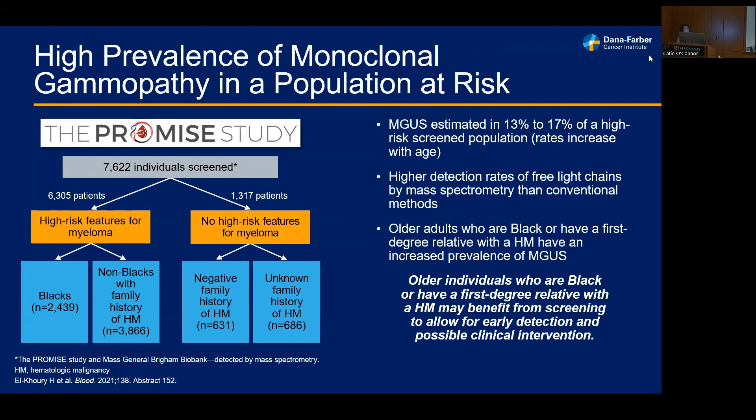Utilizing advanced technologies such as mass spectrometry, we can also detect very subtle monoclonal proteins or abnormal free light chains. The work is ongoing, but it does suggest that older individuals with predisposing factors — African-American descent or a family member with a plasma cell disorder or blood cancer — may benefit from screening for early detection of these plasma cell disorders.